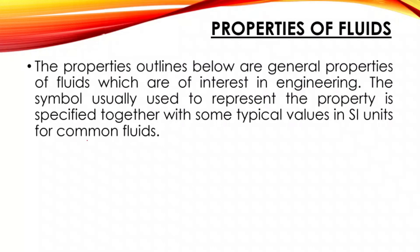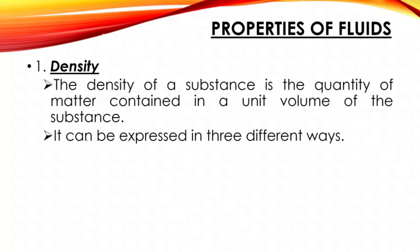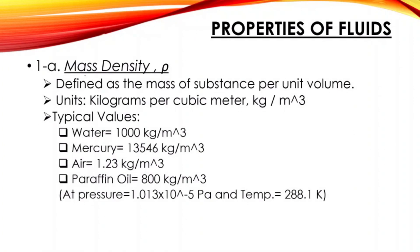First property of fluids is density. The density of a substance is the quantity of matter contained in the unit volume of the substance. It can be expressed in three different ways involving density. First is the mass density, or rho. It is defined as the mass of substance per unit volume, or that is simply rho equals mass over volume.